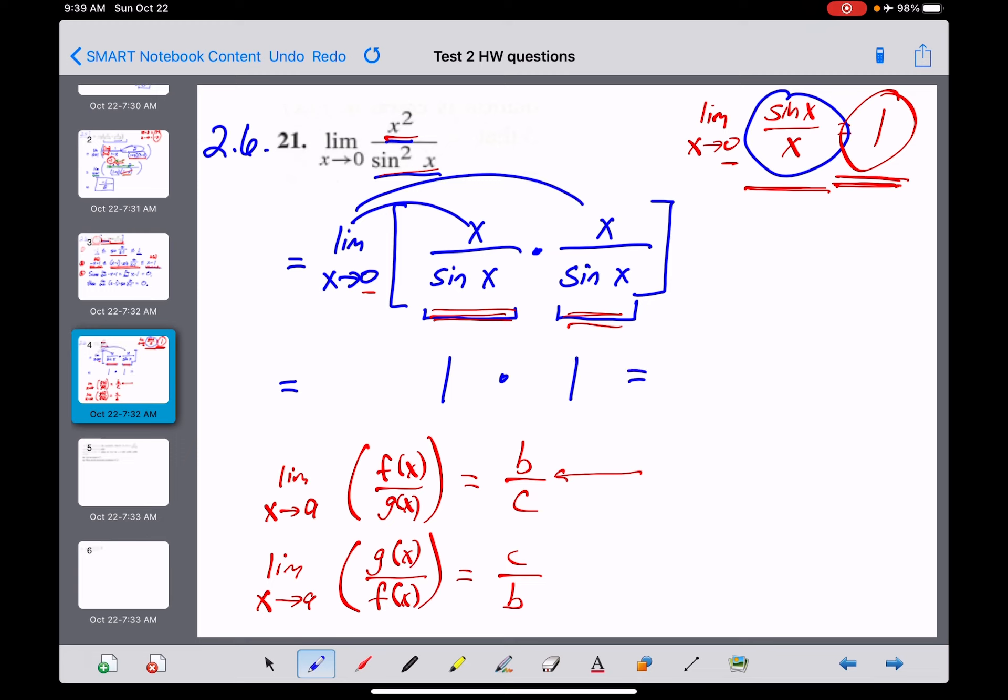It looks like I'm doing the distributive property there, guys. I'm not, but it's really the product law for limits that says the limit of a product is equal to the product of the two individual limits. That's why it looks like the distributive property. Anyway, one times one, and all that work, we're going to get a nice simple answer here of one for problem 21 in 2.6. That's it.